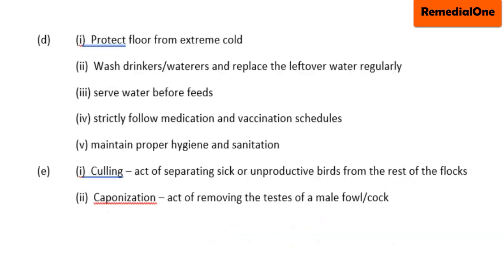Now let's go to question D: State two ways of reducing mortality among the chicks in the above unit. First, protect floor from extreme cold. Mortality means death, so if you want to protect mortality among the chicks, then protect the floor from extreme cold. Next one: wash drinkers, or you can say wash waterers, and replace the leftover water regularly.